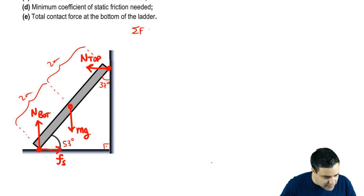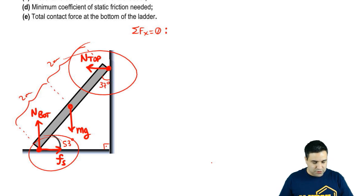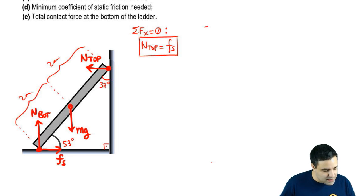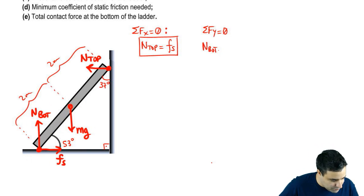I can write that the sum of all forces in the x-axis equals zero. What this means is that the forces in the x cancel each other. So I'm going to have normal top. I'm going to have that normal top equals friction static. That's friction at the bottom. Sum of all forces on the y-axis equals zero. So this means that n bottom equals mg. The two cancel. So n bottom equals mg.